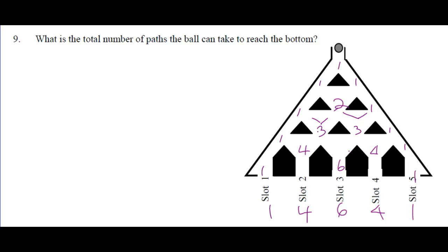Where is it most likely going to come out? Slot 3 — six out of those sixteen times. So if we're doing probability, you've got a 1 in 16 chance of coming out of the outer slots, 4 in 16 (which is 2 out of 8) for the next slots, and 6 out of 16 (which is 3 out of 8) for the middle slot.